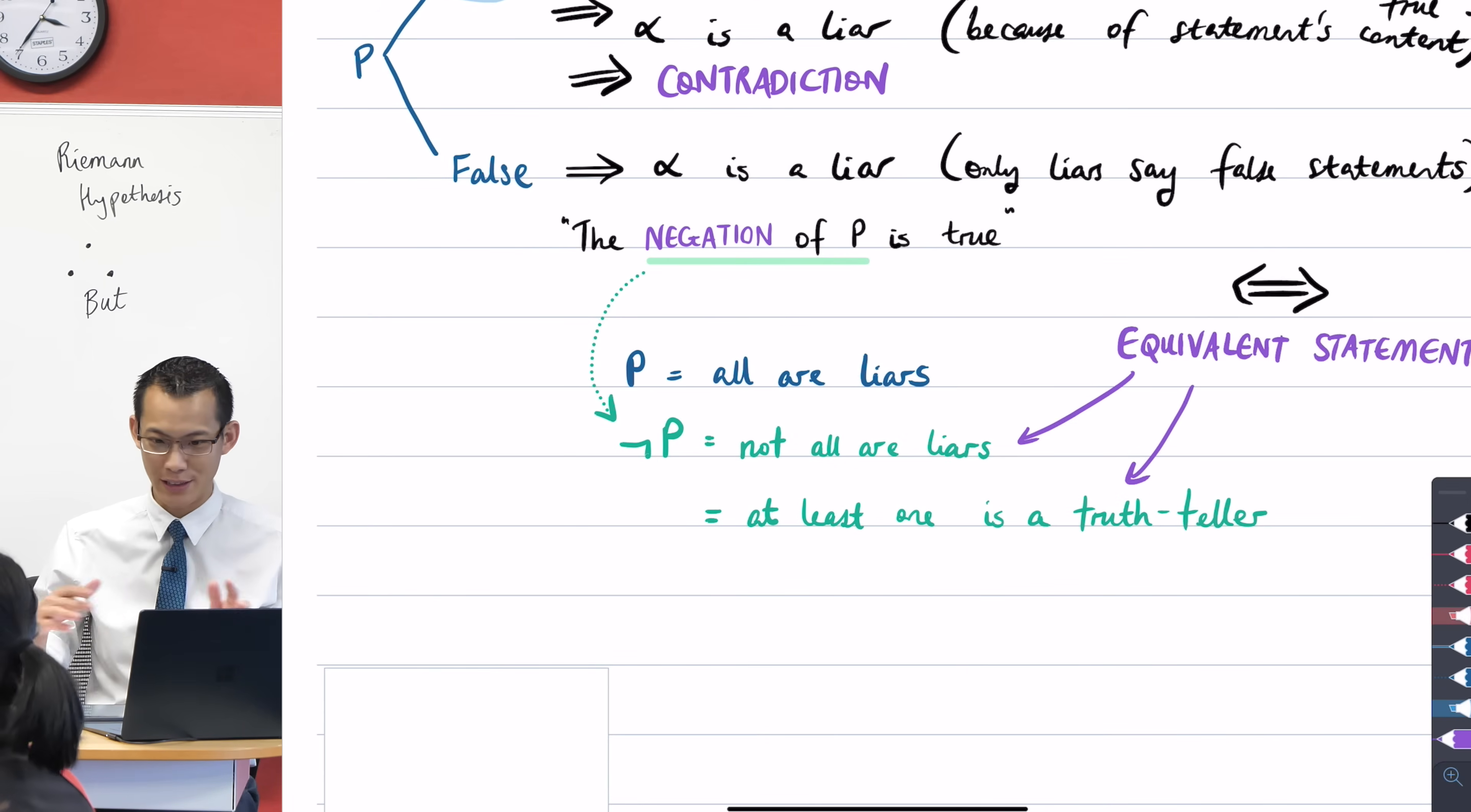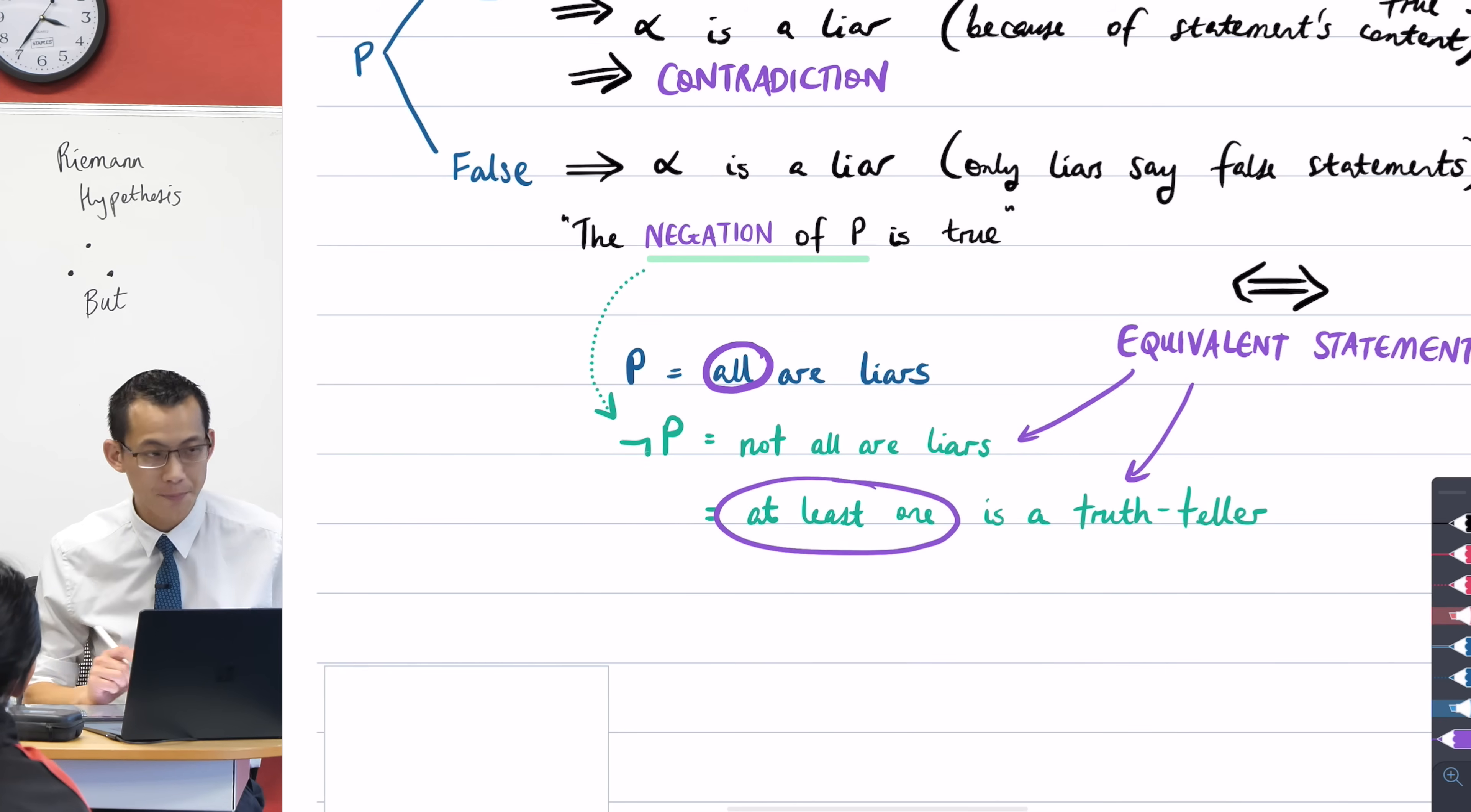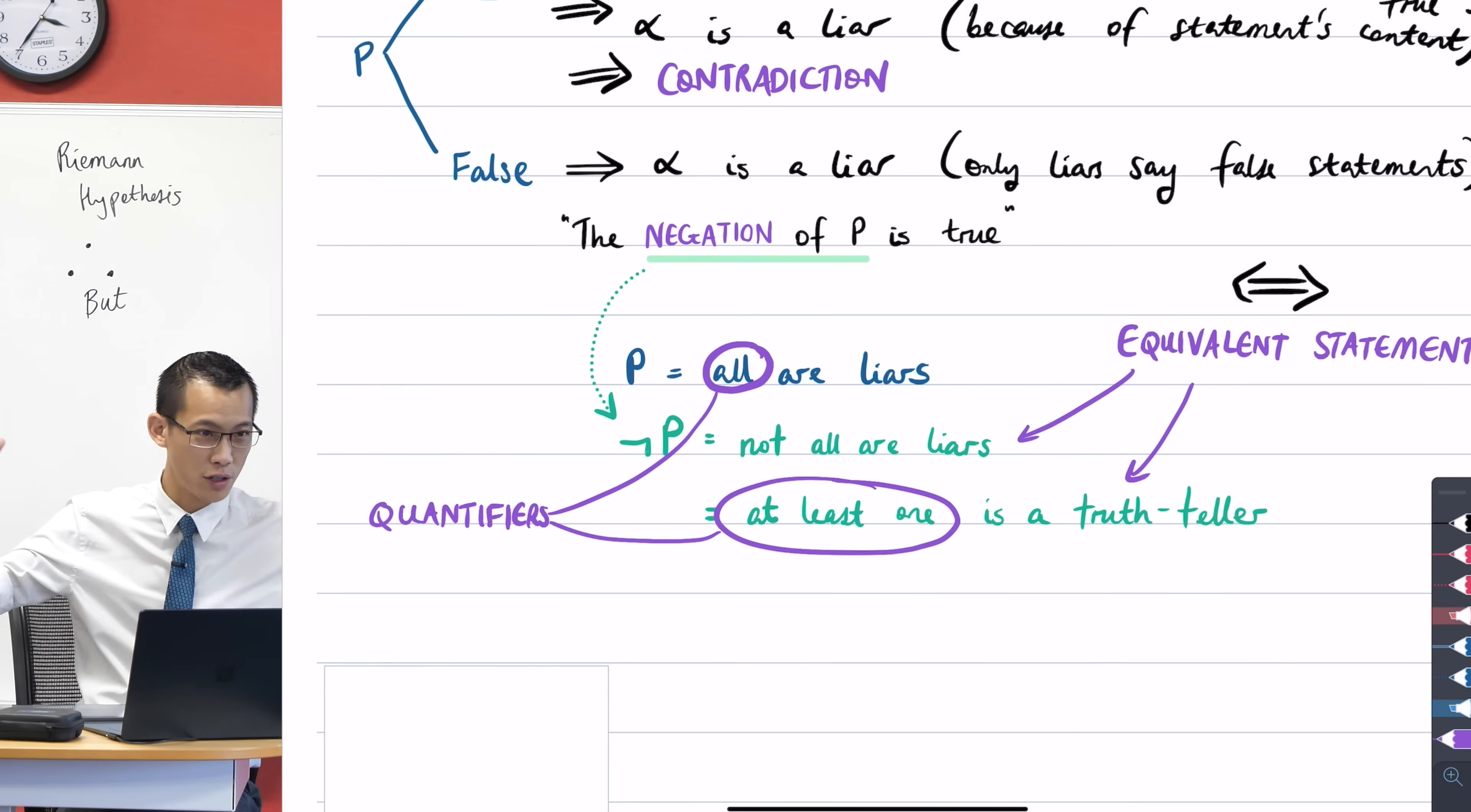Okay. Now, just before I jump off of here and look at the next statement, I also want to highlight these two words or phrases. So all, or at least one, they tell you something about how many things are true. So we have a name for this, a bit of a fancy word. We call these quantifiers, as in quantity. So these are statements of size or number. How many things are true? All of them, some of them, at least one, at least two. And these are all quantifiers.